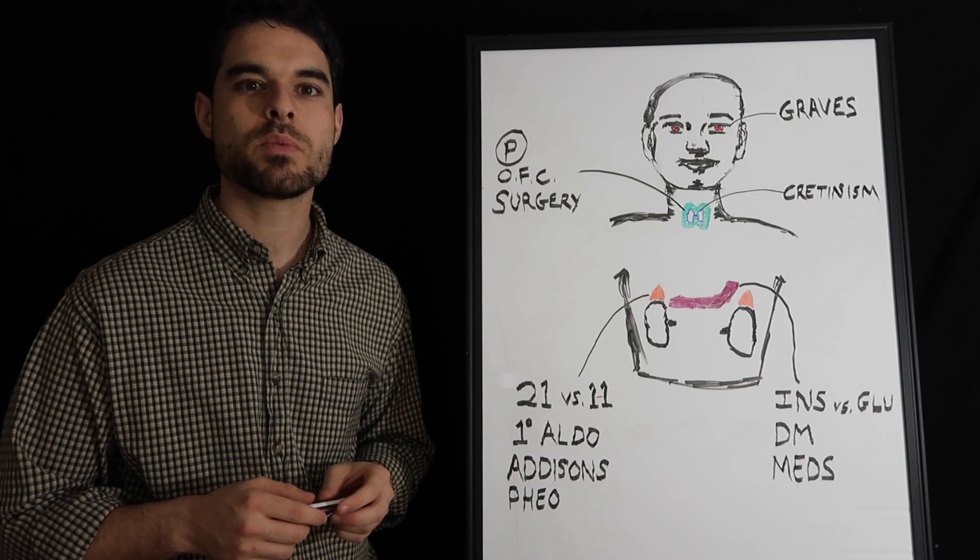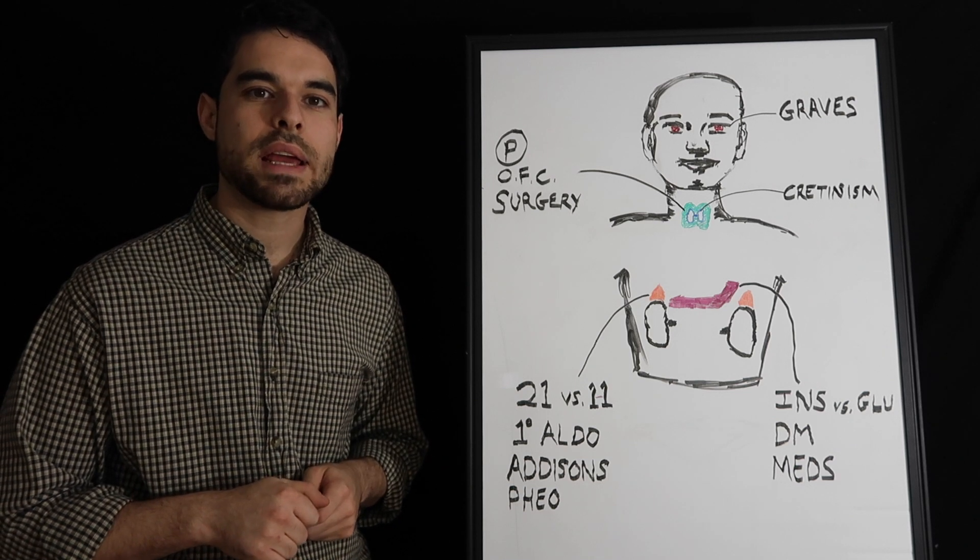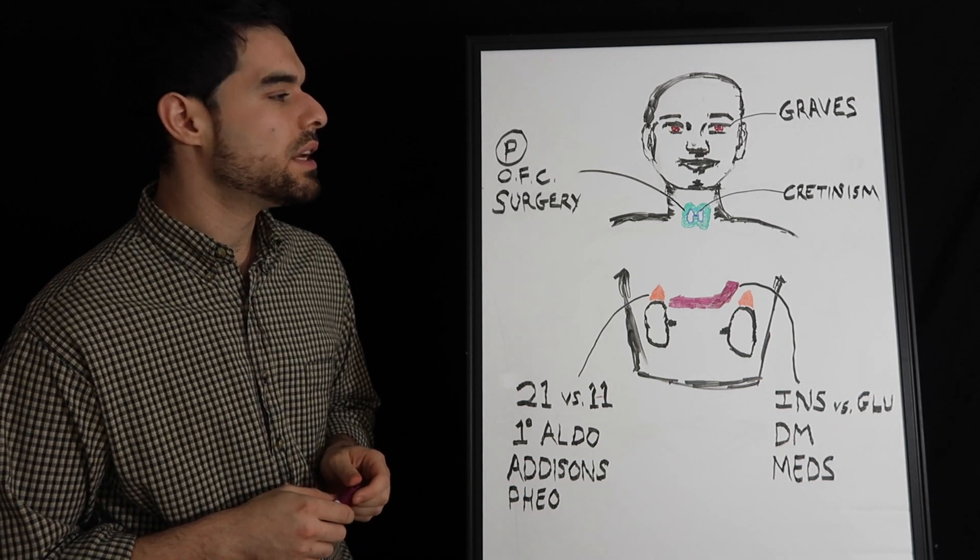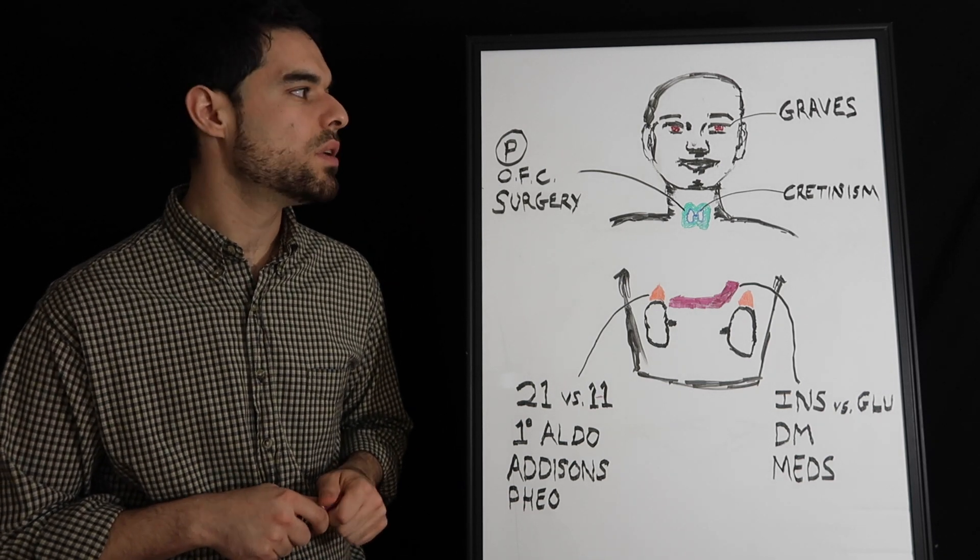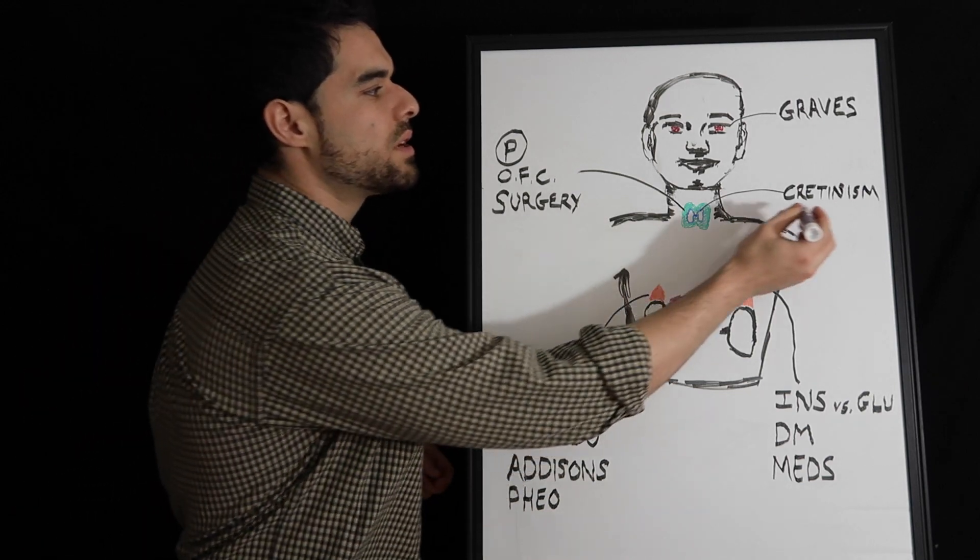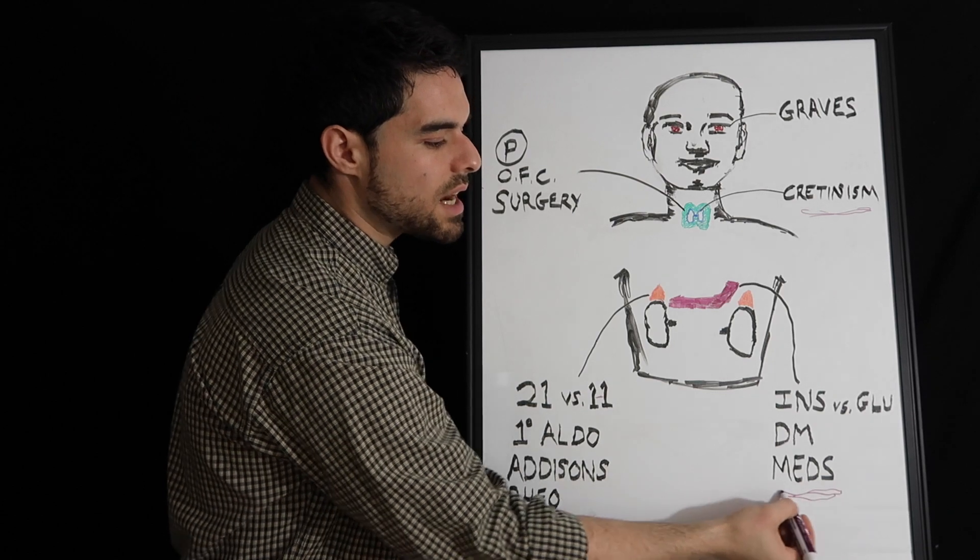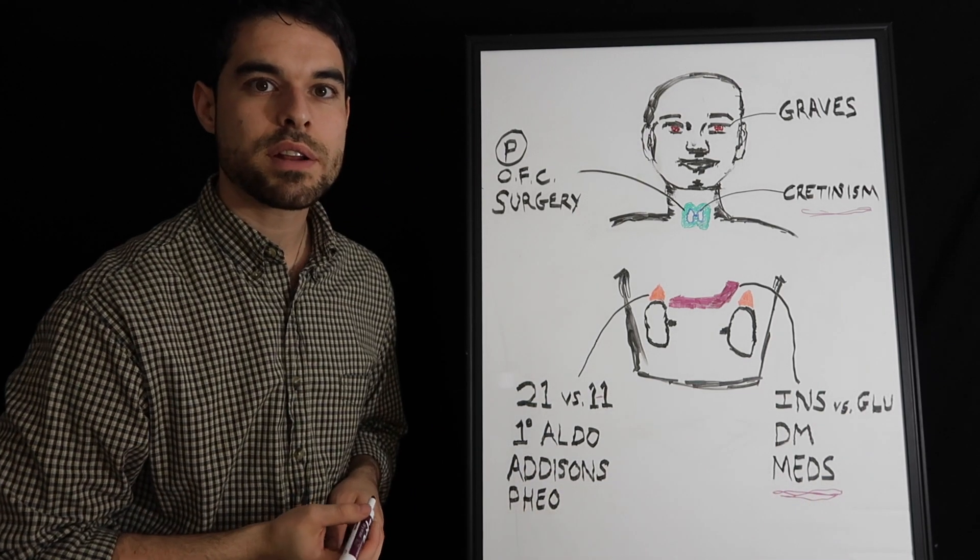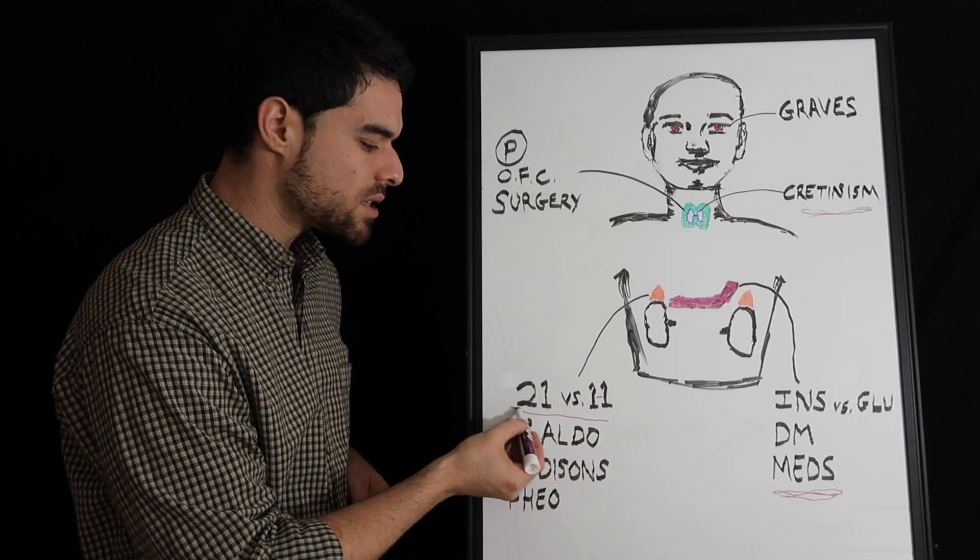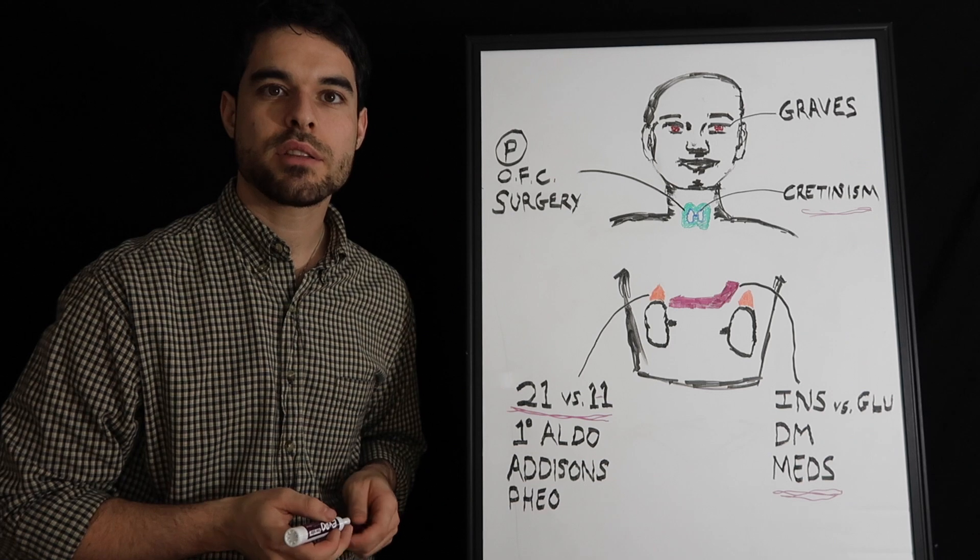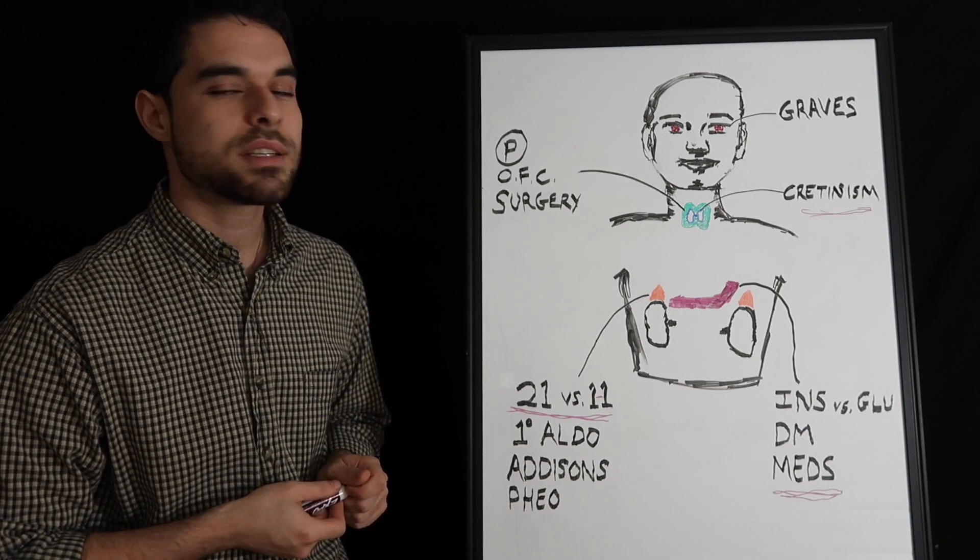The glitazones are the last one we'll talk about. Those can cause edema and weight gain. Out of all the things we talked about in the endocrine system, if you want to narrow it down to the three most important things to know, would be cretinism, know congenital hypothyroidism, know the medications over here, particularly the disulfiram-like reactions in sulfonylureas is asked very commonly, and also know 21 versus 11 hydroxylase deficiency. These are, in my opinion, the three most important, most commonly tested topics in the endocrine system.